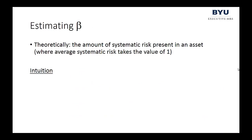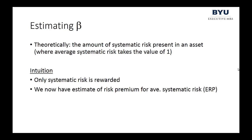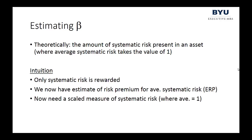Theoretically, beta is the amount of systematic risk present in an asset, where average systematic risk takes the value of one. We need beta defined such that if an asset has average systematic risk, it takes the value of one. Only systematic risk is rewarded, and we now have an estimate of the risk premium for average systematic risk — the equity risk premium. We need a scaled measure of systematic risk where the average equals one.